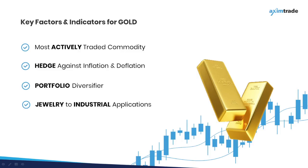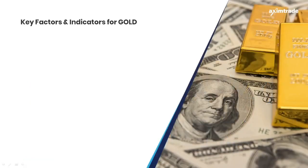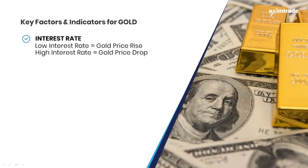There are few factors that impact the price of gold. First, the interest rate. Interest rates have an inverse relationship with gold prices. Gold prices rise when interest rates drop because investors don't get good returns on their deposit. On the other hand, when the interest rate rises, people sell their gold and invest in deposits to earn higher interest, thus causing a reduction in demand and price.